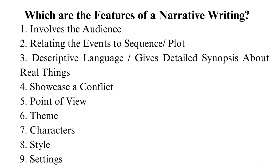Interpretation is very key in this category. Feature 2: Relating the events to sequence or plot. A plot is a series of events that occur in a narrative. You can have a simple plot with one or two events, or a multi-layered one. There are different elements of the plot that you should have in your story.